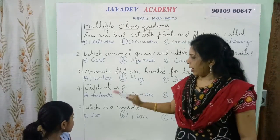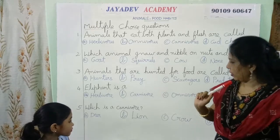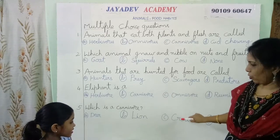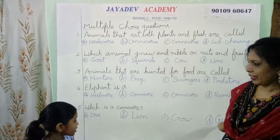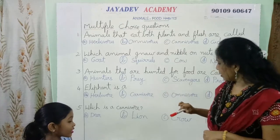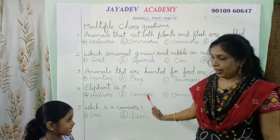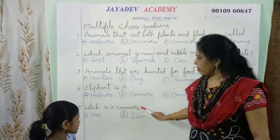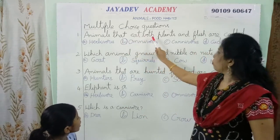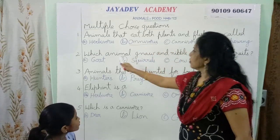And the last one is: which is a carnivore? Is it deer? No. Crow? No. Giraffe? No. Deer and giraffe are herbivores, whereas crow is an omnivore. So the correct answer is lion, which is a carnivore. It is a lion.